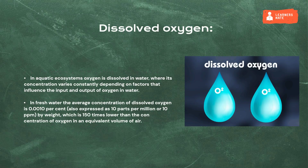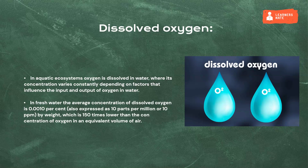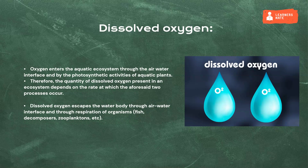Dissolved oxygen: in aquatic ecosystems, oxygen is dissolved in water, where its concentration varies constantly depending on factors that influence the input and output of oxygen in water. In fresh water, the average concentration of dissolved oxygen is 0.0010%, also expressed as 10 parts per million or 10 ppm by weight, which is 150 times lower than the concentration of oxygen in an equivalent volume of air. Oxygen enters the aquatic ecosystem through the air-water interface and by the photosynthetic activities of aquatic plants.